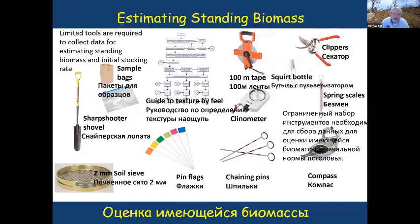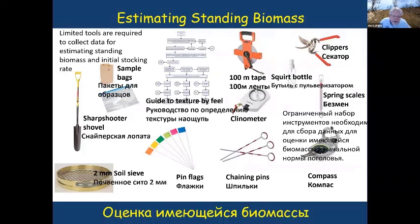To estimate standing biomass, we use very limited and inexpensive tools. We use a tape measure stretched out 100 meters in a cross formation to establish vegetation cover by walking and estimating cover by dropping a pin straight down. After completing canopy, foliar, and ground cover measurements, we clip one-meter square plots at fixed distances down the transect to get standing biomass, sorted into classes by species or life form type.